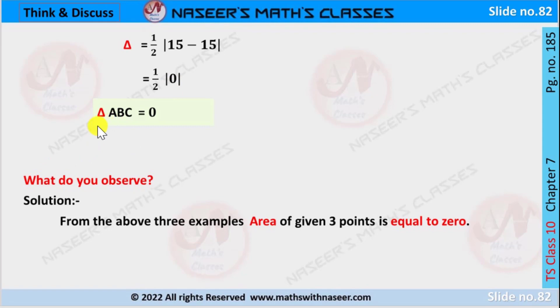Therefore, area of triangle formed by given points is equal to 0. What do you observe? From the above three examples, area of given three points is equal to 0 because these three points lie on the same line segment.